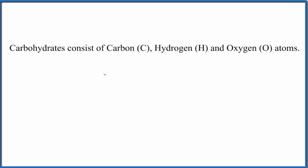So we want to figure out what elements are present in carbohydrates, and the short answer is that carbohydrates are made up of carbon, hydrogen and oxygen atoms. So carbohydrates consist of carbon, hydrogen and oxygen atoms.